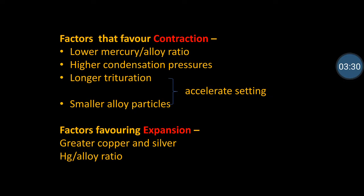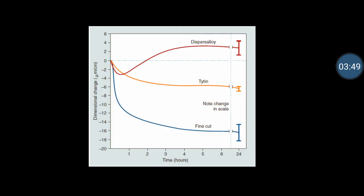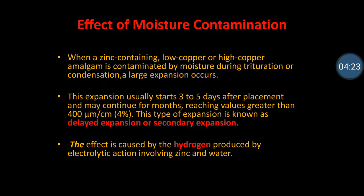Factors favoring expansion are a greater mercury-to-alloy ratio and greater copper-silver content in the composition. The graph shows contraction and expansion of amalgam over time: the maroon line represents a dispersed low-copper alloy that tends to expand, while the orange and blue lines represent high-copper alloys that tend to contract more.